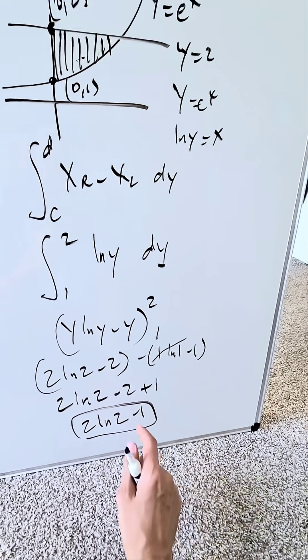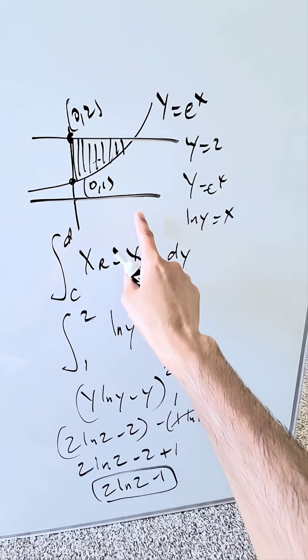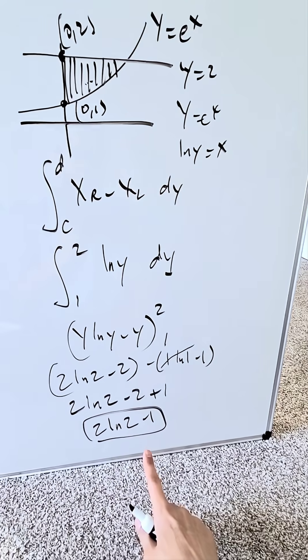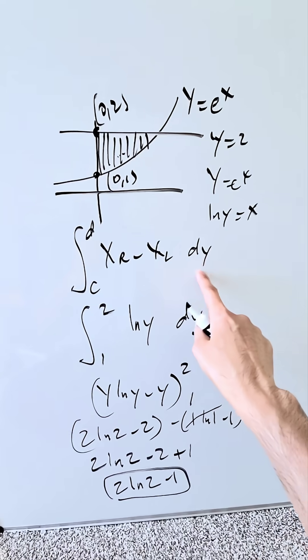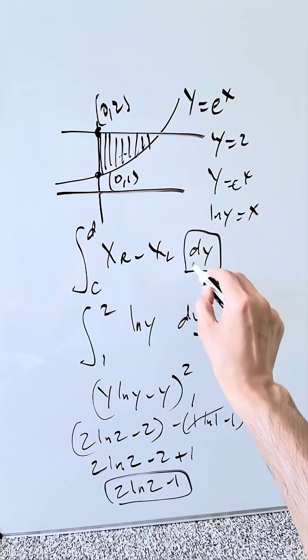It is exactly what we saw in the previous video. Here I have the exact same result, 2 natural log 2 minus 1 using a dy integral setup.